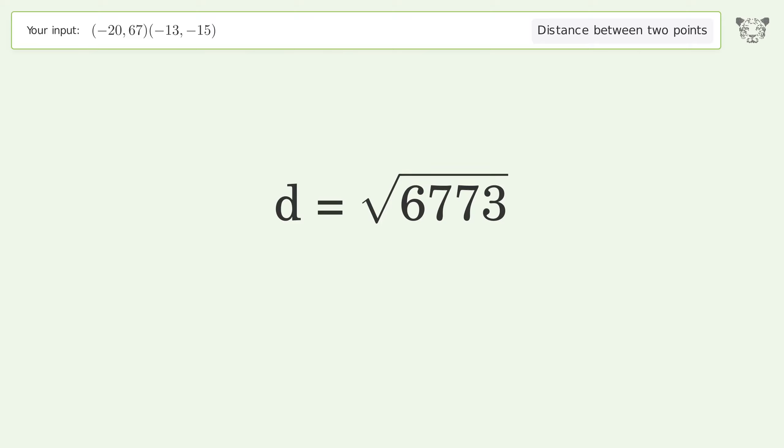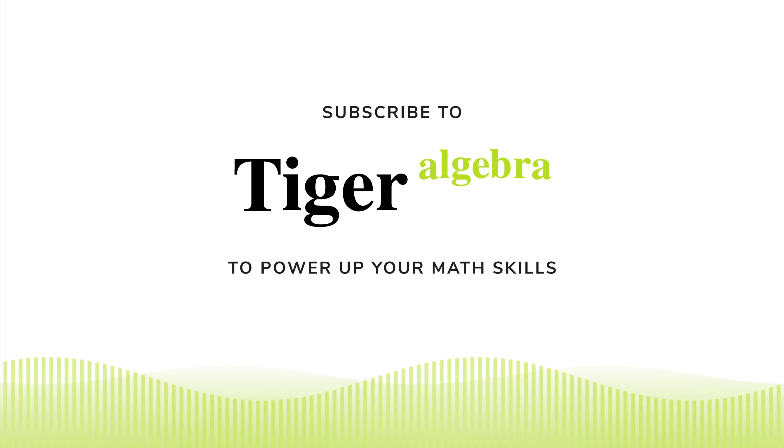And so the distance between the two points is the square root of 6773 or 82.298.